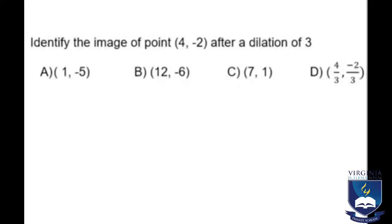Identify the image of point (4, -2) after a dilation of 3. A) (1, -5), B) (12, -6), C) (7, 1), D) (4/3, -2/3). To find the image of the point after the dilation of 3, you have to multiply 3 to the x-coordinate and y-coordinate.